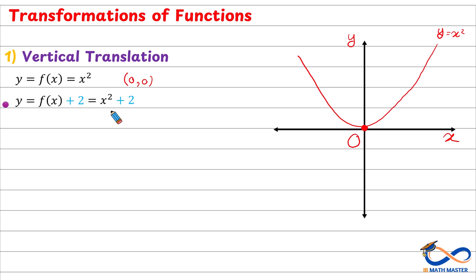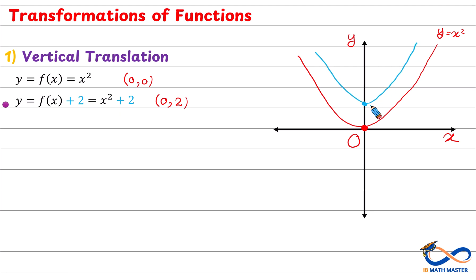Since we added 2 to the function f or y, the movement or translation will be across the y-axis, up or down. Since we added a positive number, it will be 2 units up. In the new function, if you replace x by 0, y will be 0 plus 2, which is 2. So the new vertex of the quadratic is at (0, 2), which is here on the y-axis. This is the graph of y equals x squared plus 2, shifted 2 units up.